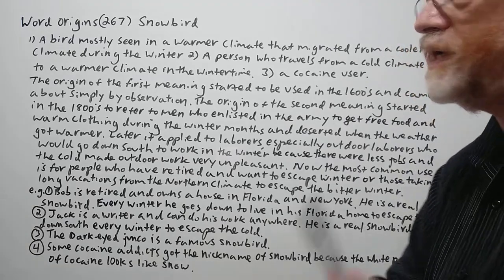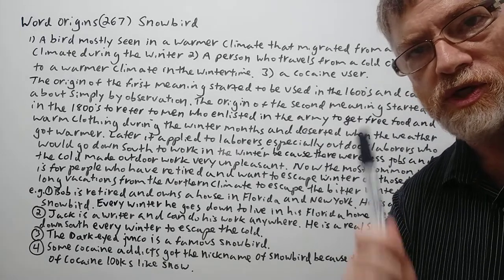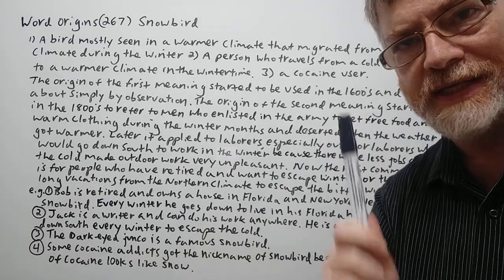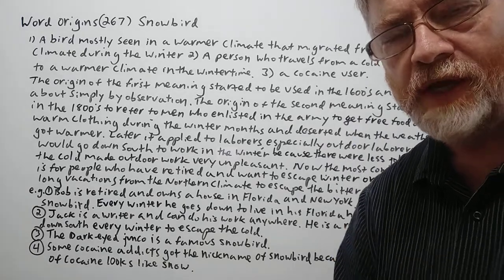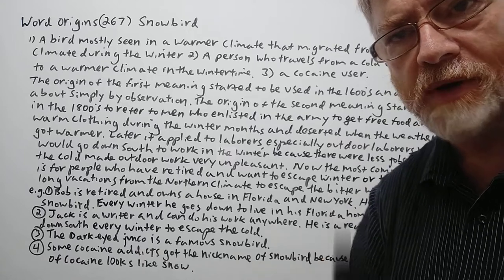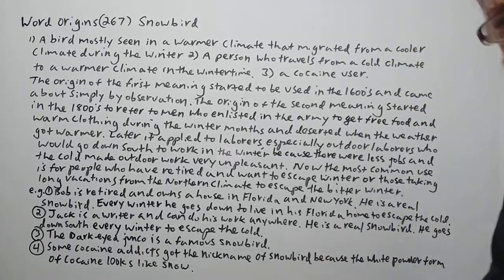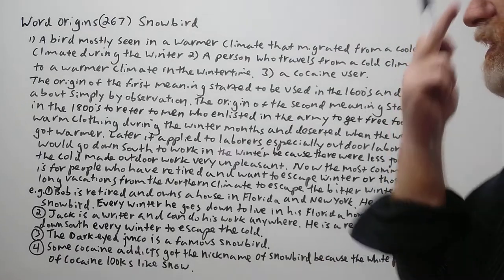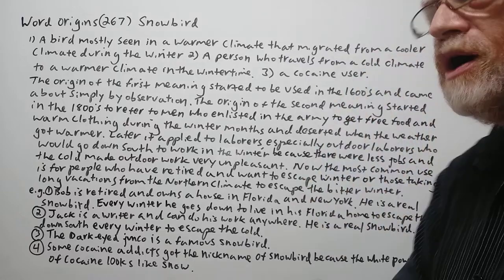Hi, this is Tutor Nick P and this is Word Origins 267. The word origin today is snowbird. Somebody wants a screenshot — do it right now. Let's get right to it.